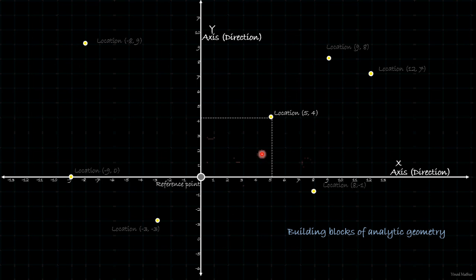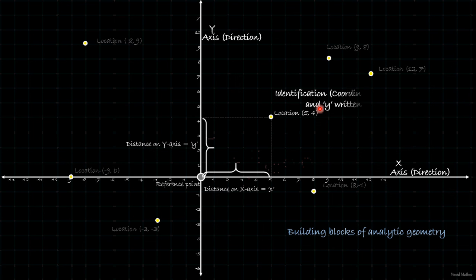What is the distance I need to move in both these directions to reach a given point? If this is small x and small y, then the unique identifier for a point is written as x comma y, or these are the coordinates of this point. These three things together are the building blocks.